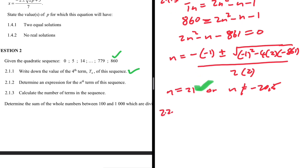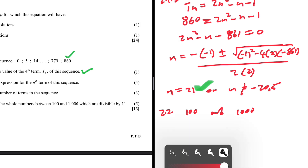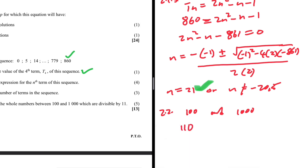Question 2.2: determine the sum of whole numbers between 100 and 1000 which are divisible by 11. The smallest number greater than 100 which is divisible by 11 is 10 × 11 = 110.